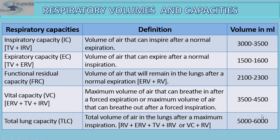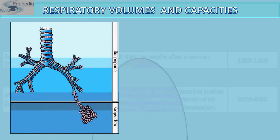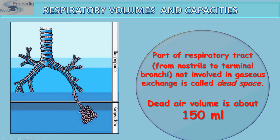The total lung capacity averages about 5,000 ml. The bronchi bifurcate into primary and secondary bronchioles, which are the conducting parts, while the alveoli are the main respiratory part. The part of the respiratory tract from the nostril to the terminal bronchioles is not involved in gaseous exchange and is called the dead space; the dead air volume is about 150 ml.